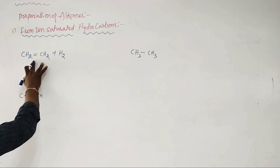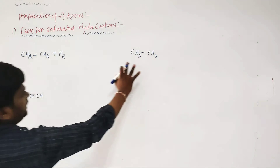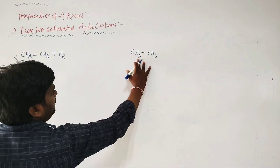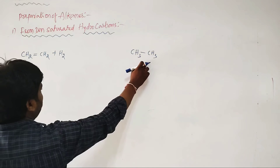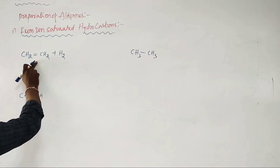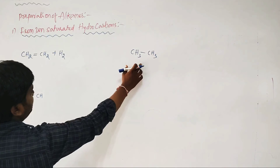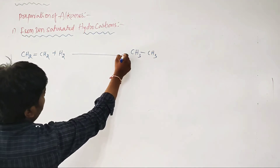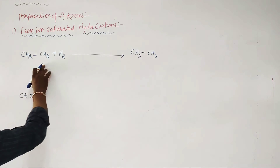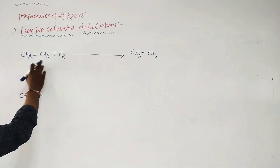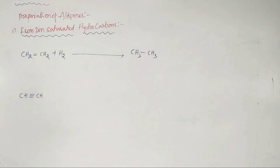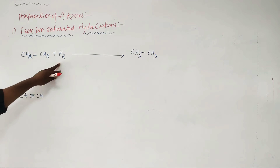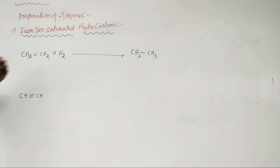Ethylene has 2 carbons and 4 hydrogens, while ethane has 2 carbons and 6 hydrogens — an extra 2 hydrogens are present. Hydrogen is added to the alkene molecule to get alkane as a product. The name of this reaction is addition of hydrogen, or hydrogenation of unsaturated hydrocarbons.